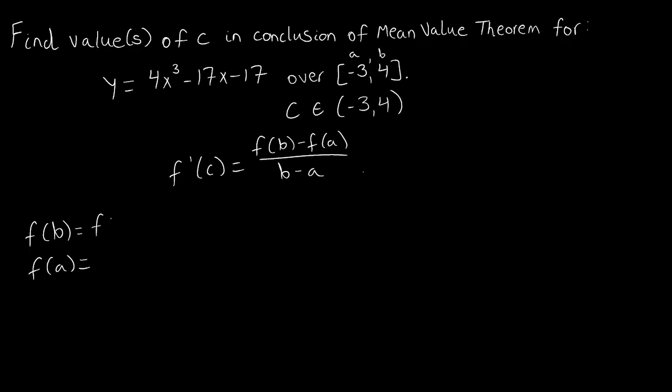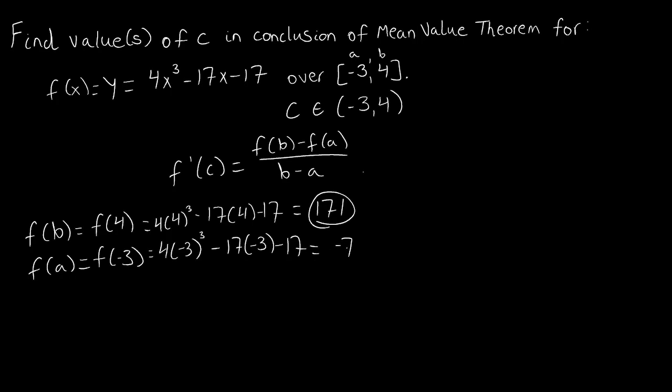So here we're going to have f(4) and f(-3). If we plug those into our y here, we call this y or f(x) because what is y but a function of x. If we plug in four, we would get 4 times 4³ minus 17 times 4 minus 17, and this would evaluate to give us 171. And then if we do the same thing for negative three, 4 times (-3)³ minus 17 times (-3) minus 17, and this works out to be -74.